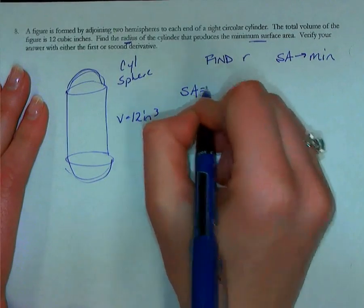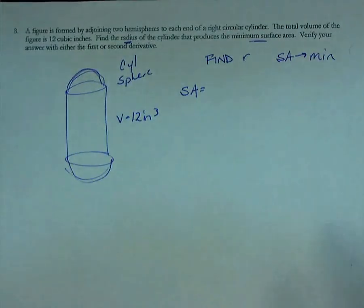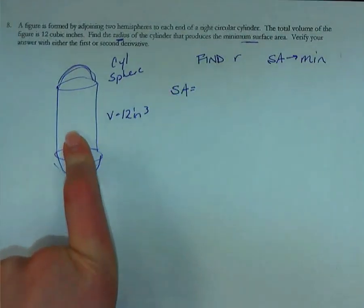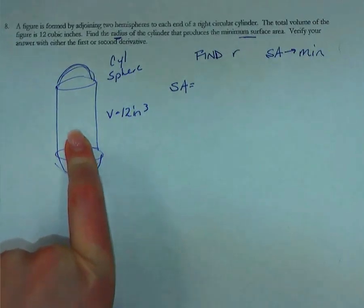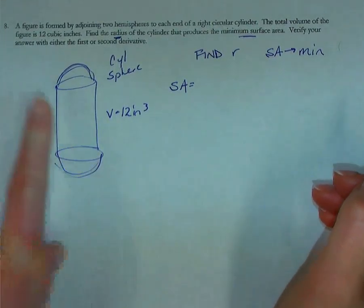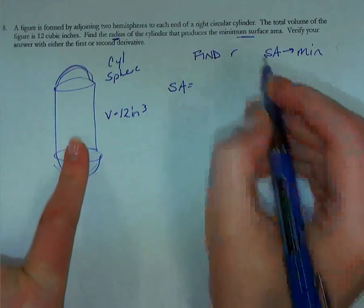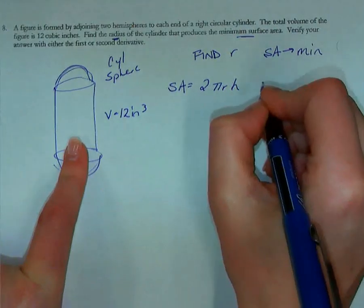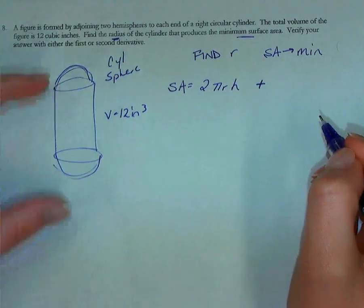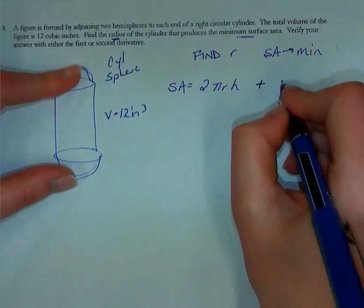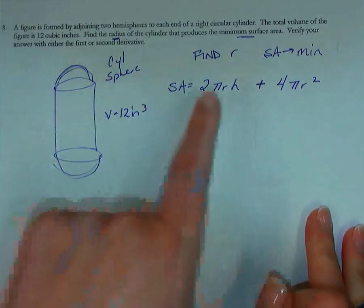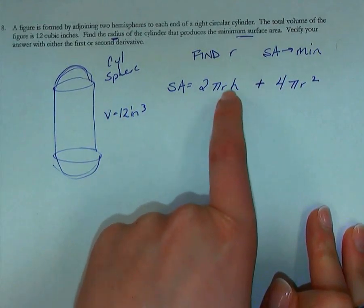So if I'm trying to minimize surface area, I need a formula for surface area. If you recall, the surface area of a cylinder is 2πrh + 2πr². However, that's for a full cylinder with a top and a bottom. I only want the part around the cylinder, so I just want the 2πrh, plus the surface area of a sphere, if you recall, 4πr².